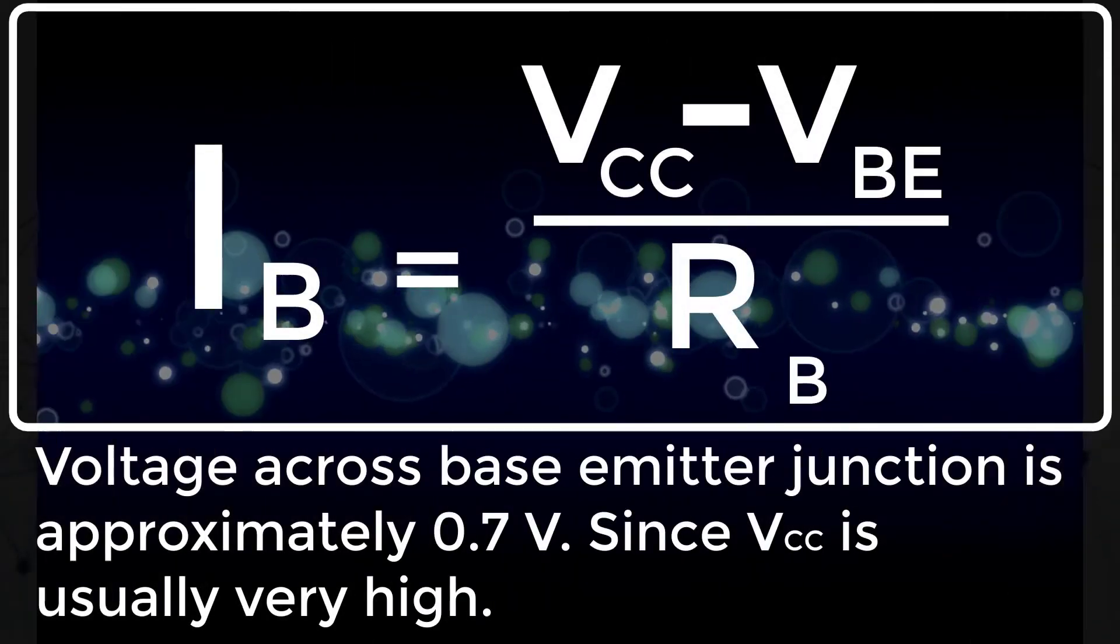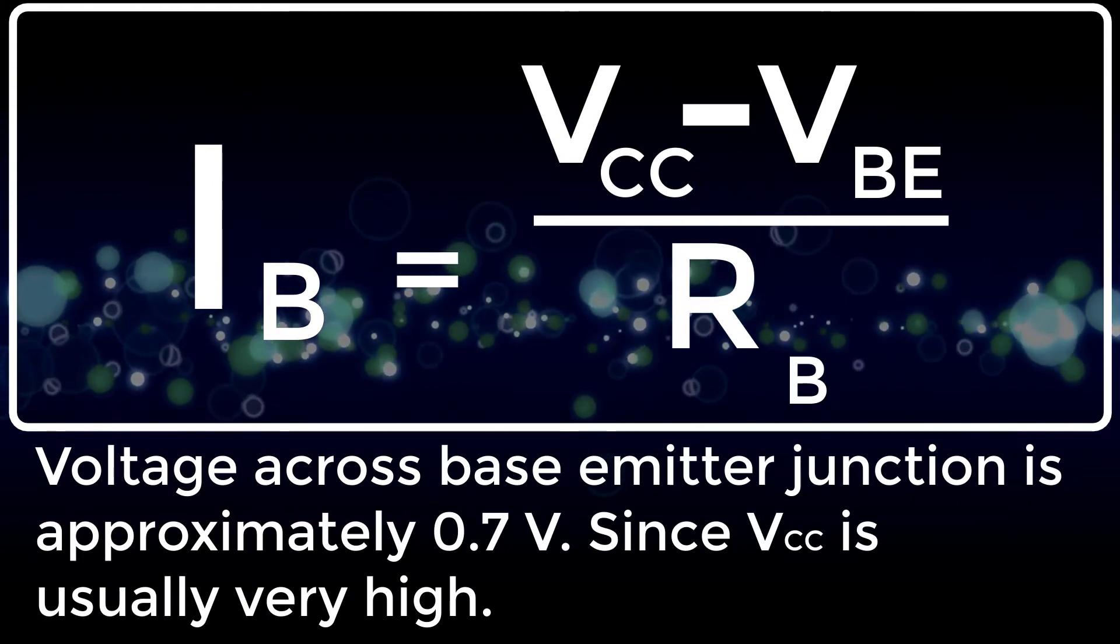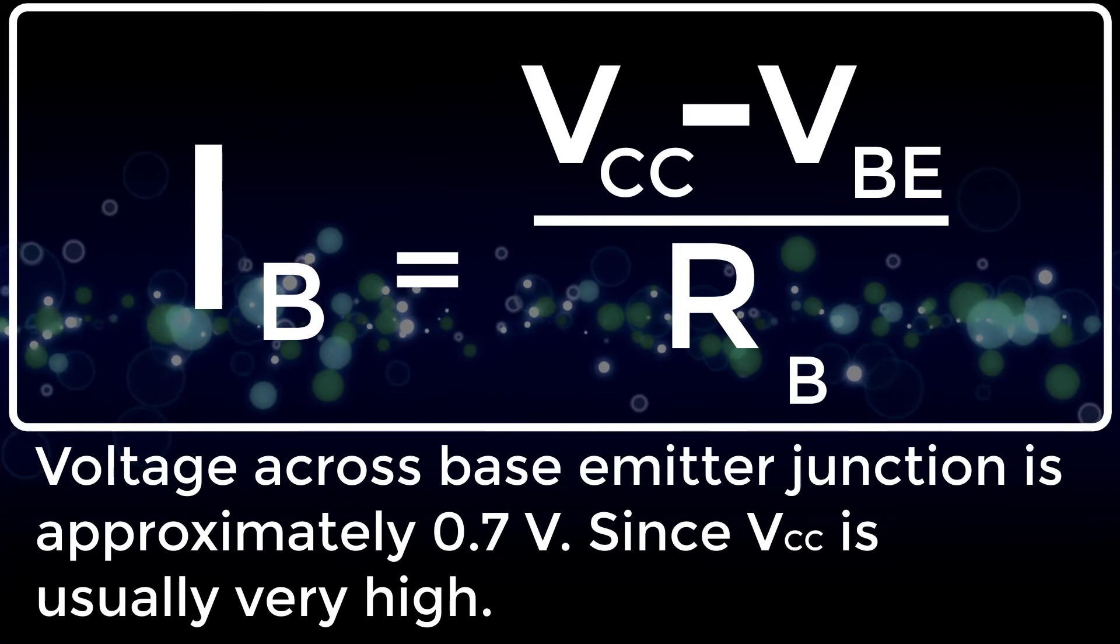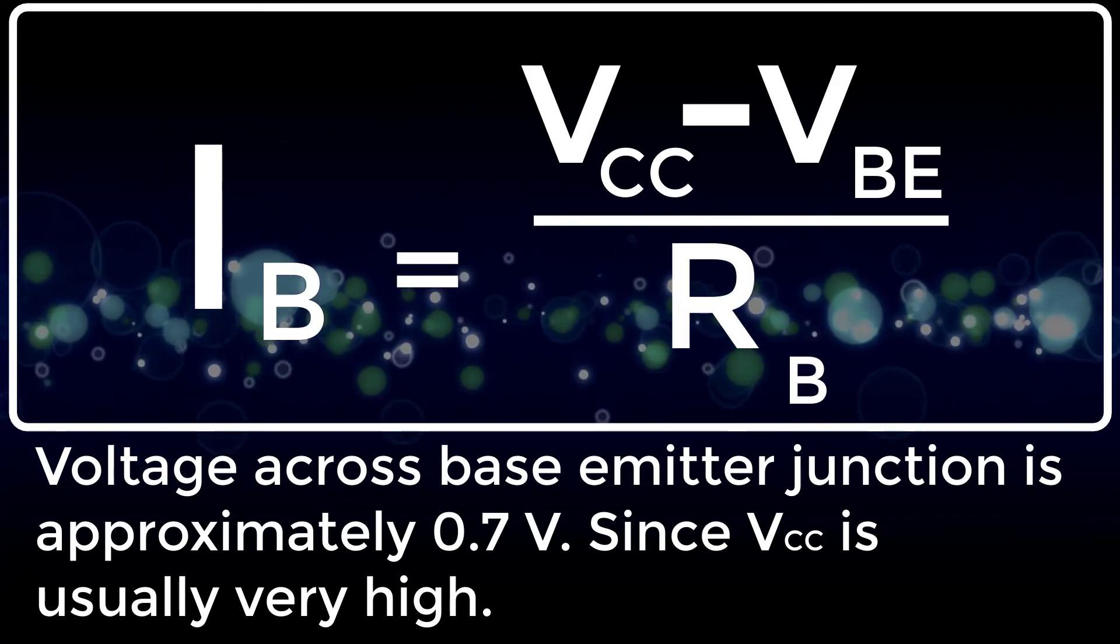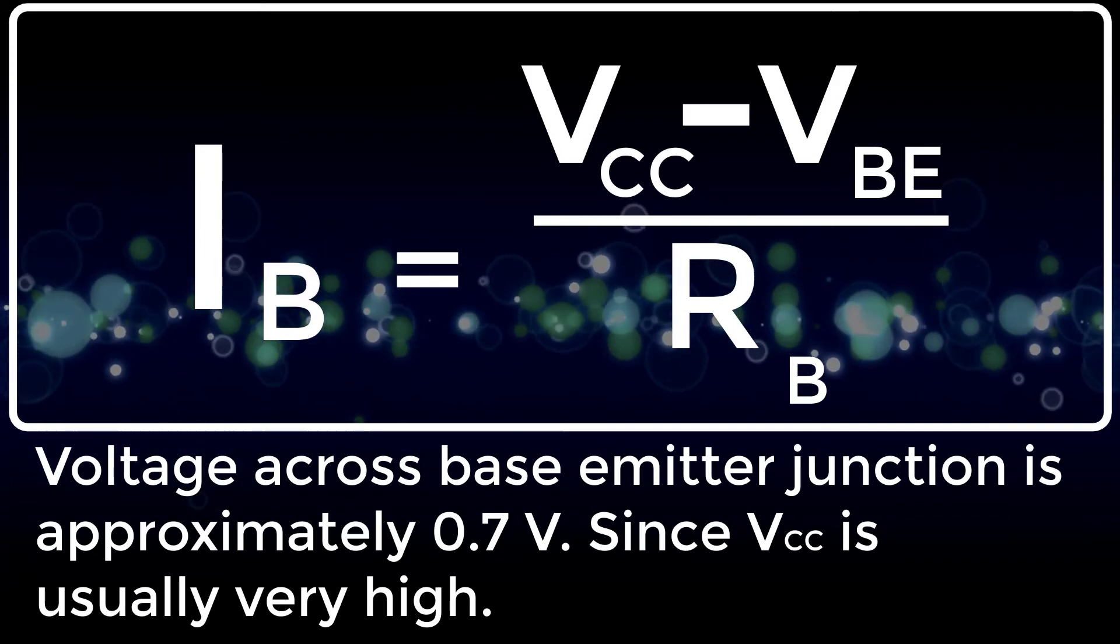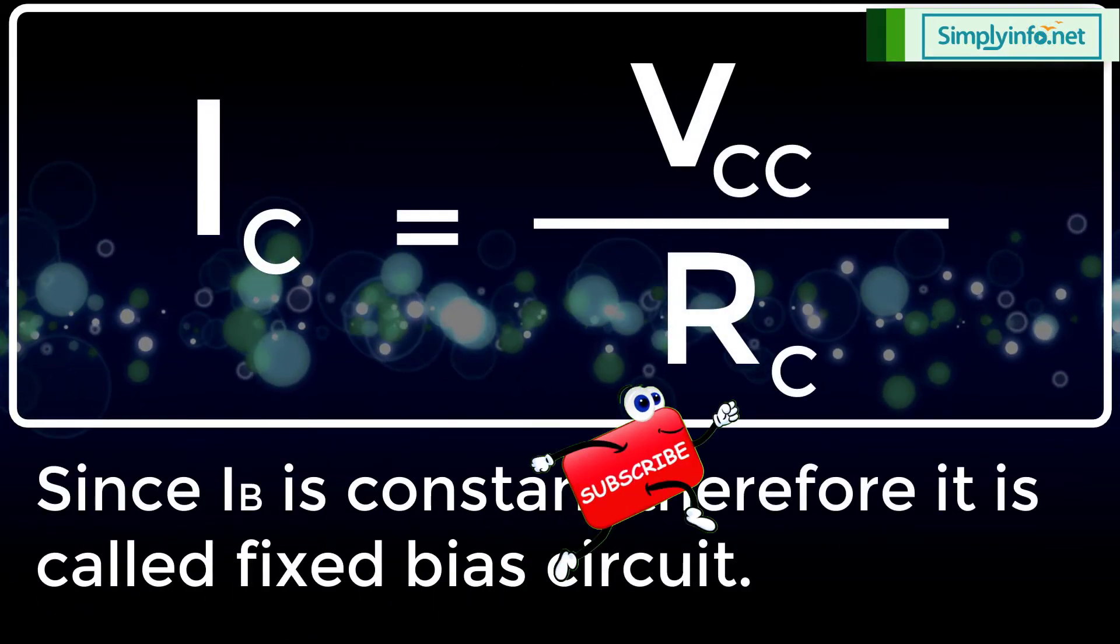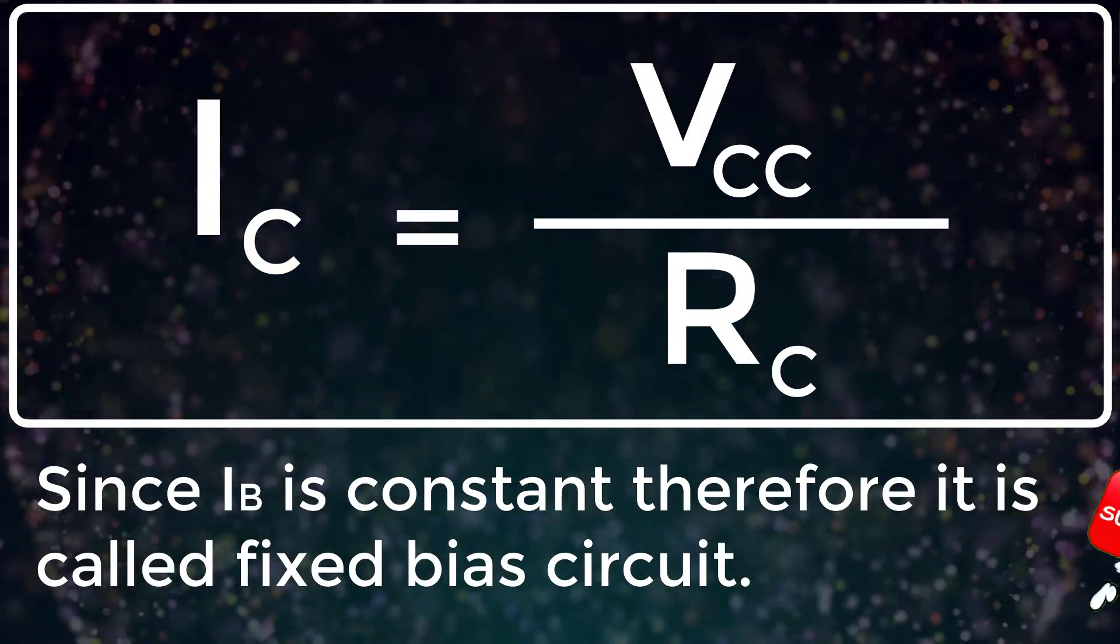IB is equal to VCC minus VBE divided by RB. Voltage across base emitter junction is approximately 0.7 volt. Since VCC is usually very high, IB is equal to VCC divided by RB.